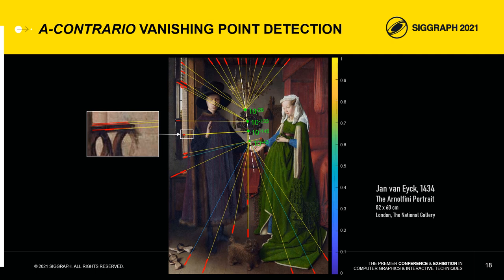The numbers shown in green indicate how many times in this painting point meetings as meaningful as the detected ones are expected to occur by chance, given the total number of segments. The four numbers are much less than one, indicating that these meetings cannot be due to chance.